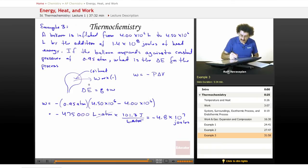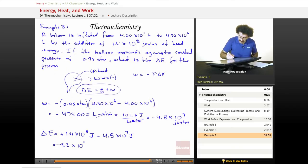Now we just said that delta E equals Q plus W. We calculated W, that's negative 4.8 times 10 to the 7 joules. So now delta E equals Q plus that. Well, Q is positive, it is 1.4 times 10 to the eighth joules, minus 4.8 times 10 to the 7 joules. So our change in energy is 9.2 times 10 to the 7 joules.